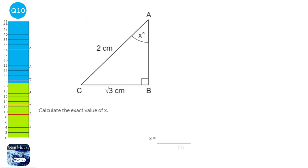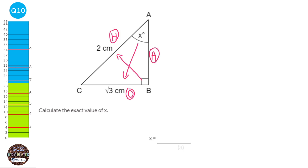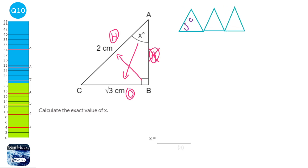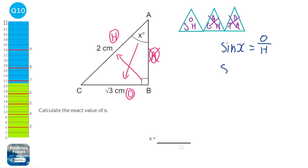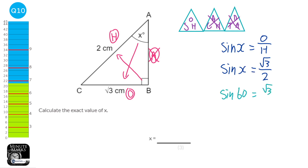We're going to first recognise this is a right-angle triangle with two lengths and an angle — so it's trigonometry. We label the sides: the one opposite the right angle is the hypotenuse, opposite the marked angle is the opposite, and between the right angle and marked angle is the adjacent. The adjacent has no number or letter, so it's not interesting — get rid of that. Using SOH-CAH-TOA, we cross out adjacent, leaving SOH: sine of the angle equals opposite over hypotenuse. The angle is x, so sine x equals root 3 over 2. You need to know from memory that sine 60 is root 3 over 2, so x equals 60.